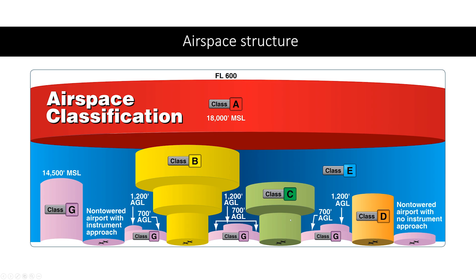Class C airspace is around busier towered airports and it looks like an upside-down wedding cake. The center is where the busy airport is, and it extends from there up to the top of the class C. They build a little shelf out — once you get a certain distance from the center, the airspace turns into class E until you reach the bottom shelf of the C, then it's class C again, and above that is class E. Class B is similar but a lot bigger, and usually has weird geometries — it's a bigger upside-down wedding cake.